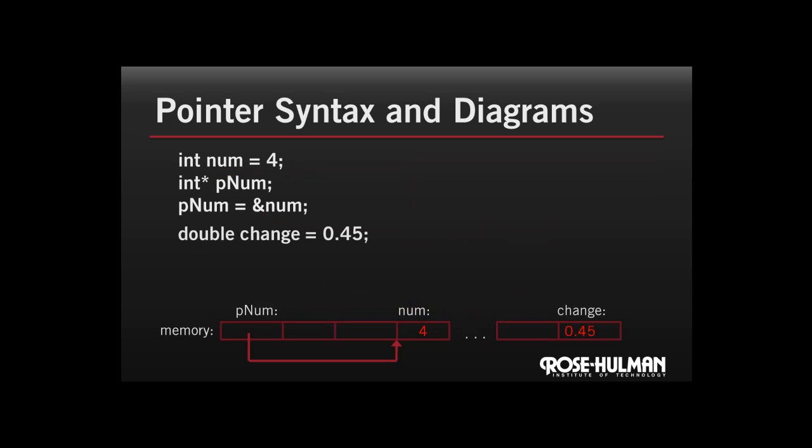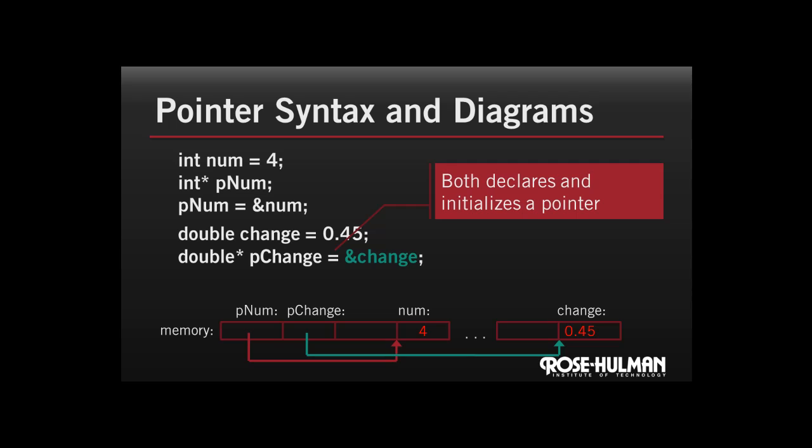Let's look at another example. Here I'm declaring change to be a double with a value of 45 hundredths. Now if I want a pointer to that double, how do we do it? Here's the syntax. pChange is declared as type pointer to double. Now you'll notice that I'm declaring that pointer and then giving it a value in the same line. So I'm saying that that gets the address of change. We can see the green line here shows that pChange refers to the value change.